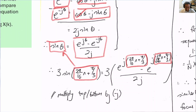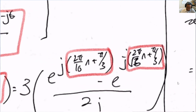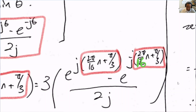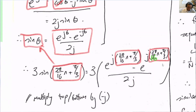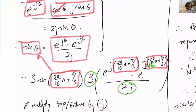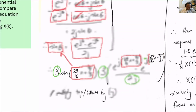Just be careful about the handwriting here — it should be 2π/16·n + π/3. There is of course a minus sign: it's e^(jθ) minus e^(-jθ), divided by 2j, with the coefficient 3 brought outside.